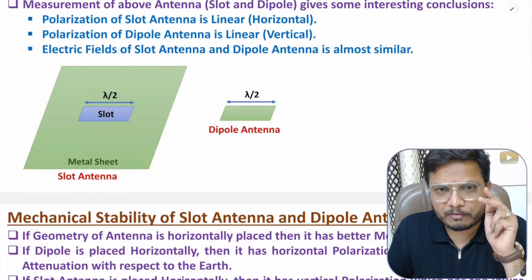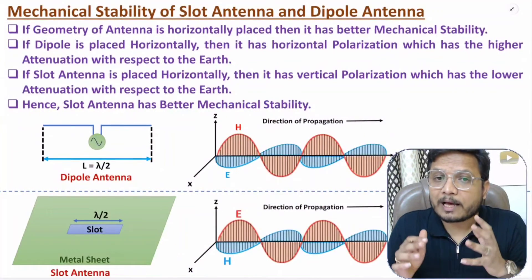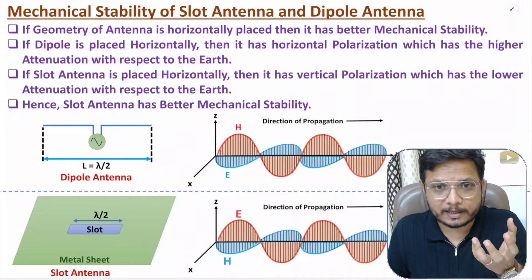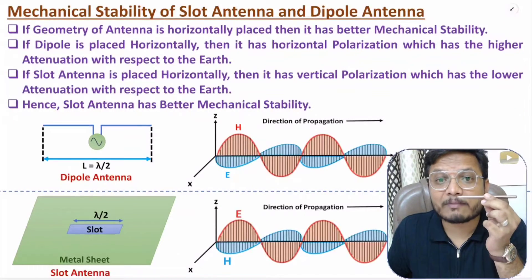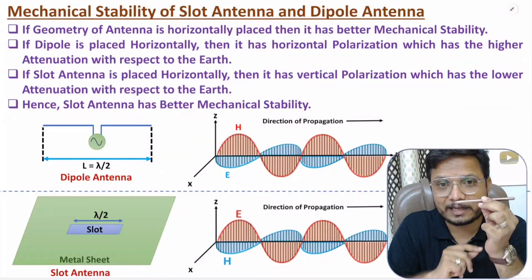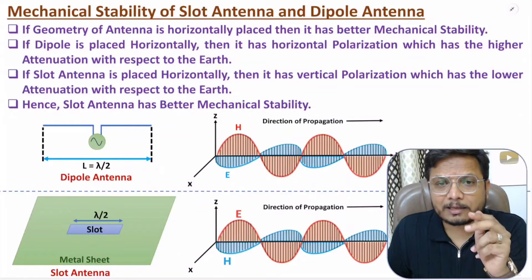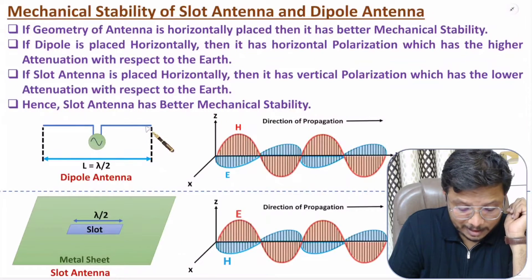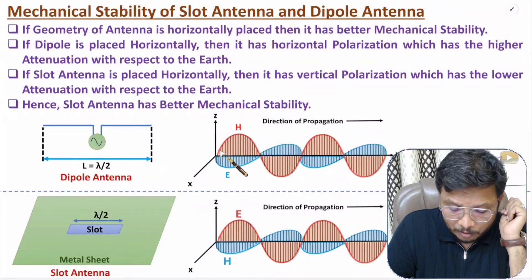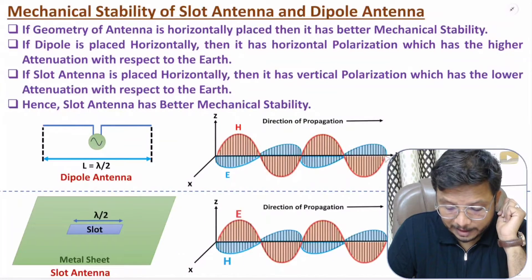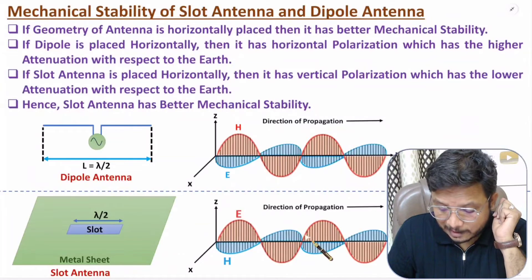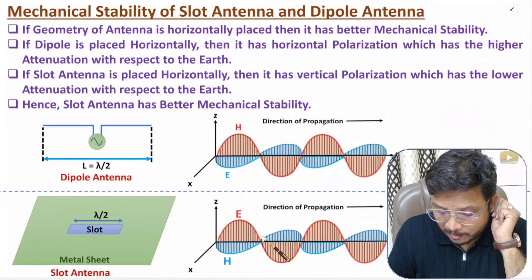For higher mechanical stability of any antenna, you must place the antenna horizontally — horizontal placement reduces the effect of wind. If a dipole antenna is placed horizontally, it produces a horizontally polarized signal, where the electric field oscillates horizontally. If a slot antenna is placed horizontally, it produces a vertically polarized signal, where the electric field oscillates vertically.